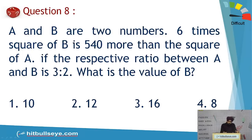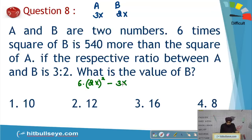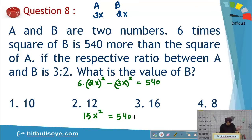The ratio of A to B is 3:2, so take A = 3x and B = 2x. The equation is 6(2x)² − (3x)² = 540. Solving: 6×4x² − 9x² = 24x² − 9x² = 15x² = 540, giving x² = 36, so x = 6. Therefore B = 2x = 12.